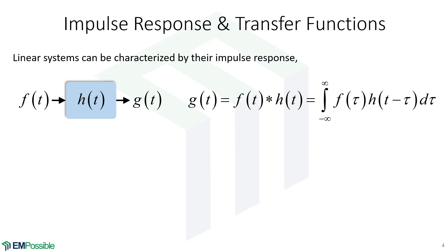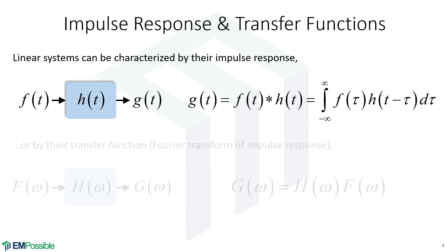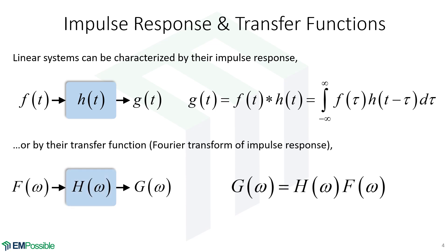If we're interested in looking at this in the frequency domain, our impulse response is called a transfer function. We have the Fourier transform of our input, the Fourier transform of our impulse response, and the Fourier transform of our output. And now it becomes very simple — it's just straightforward multiplication of our transfer function and our input to get our output.